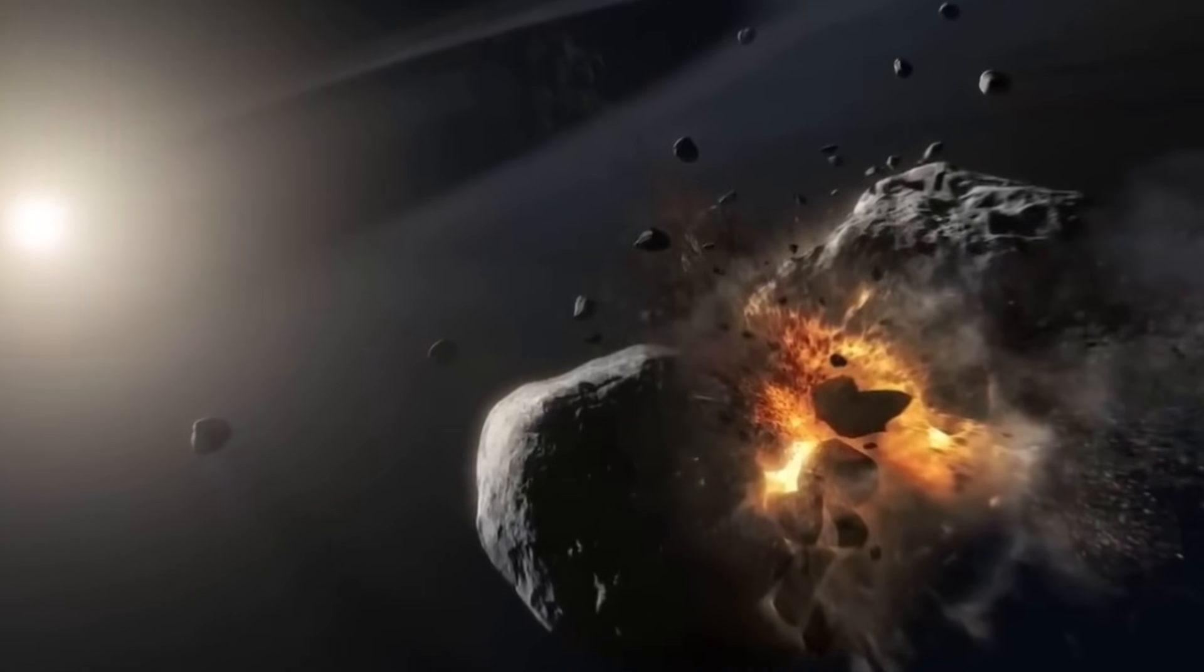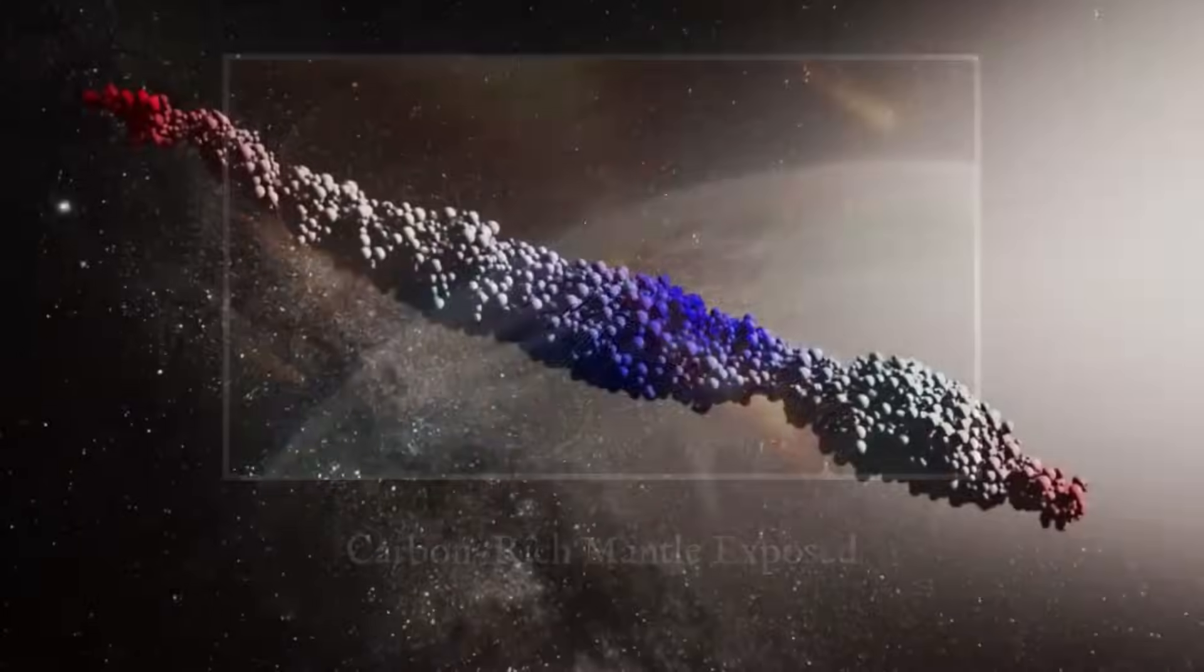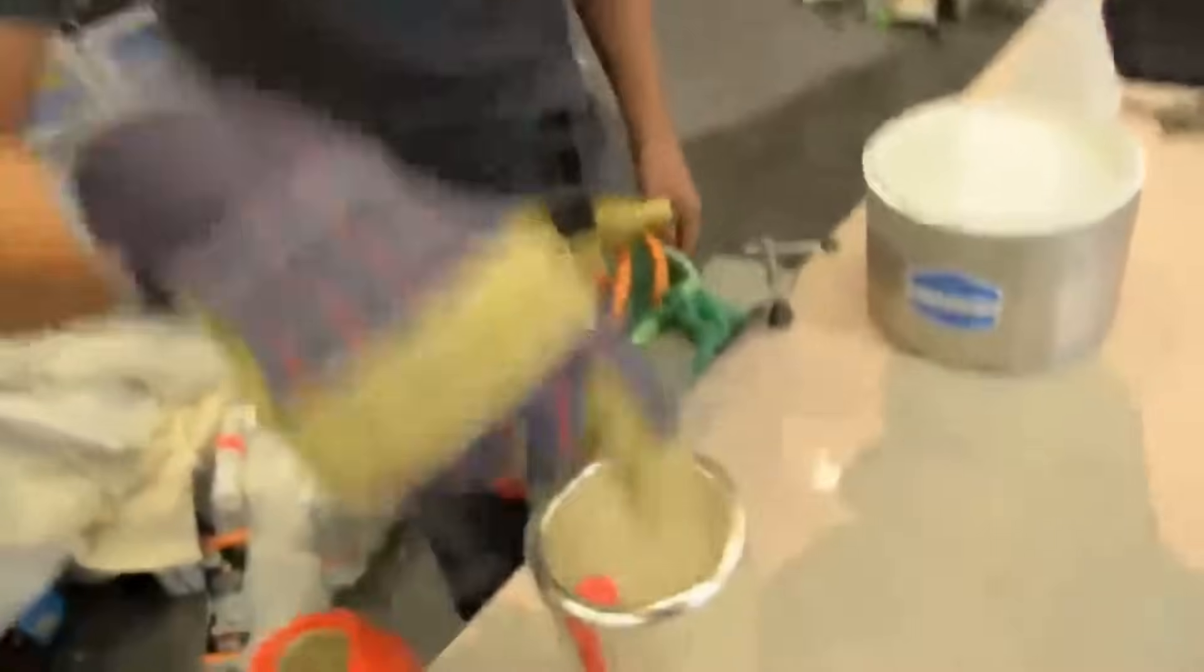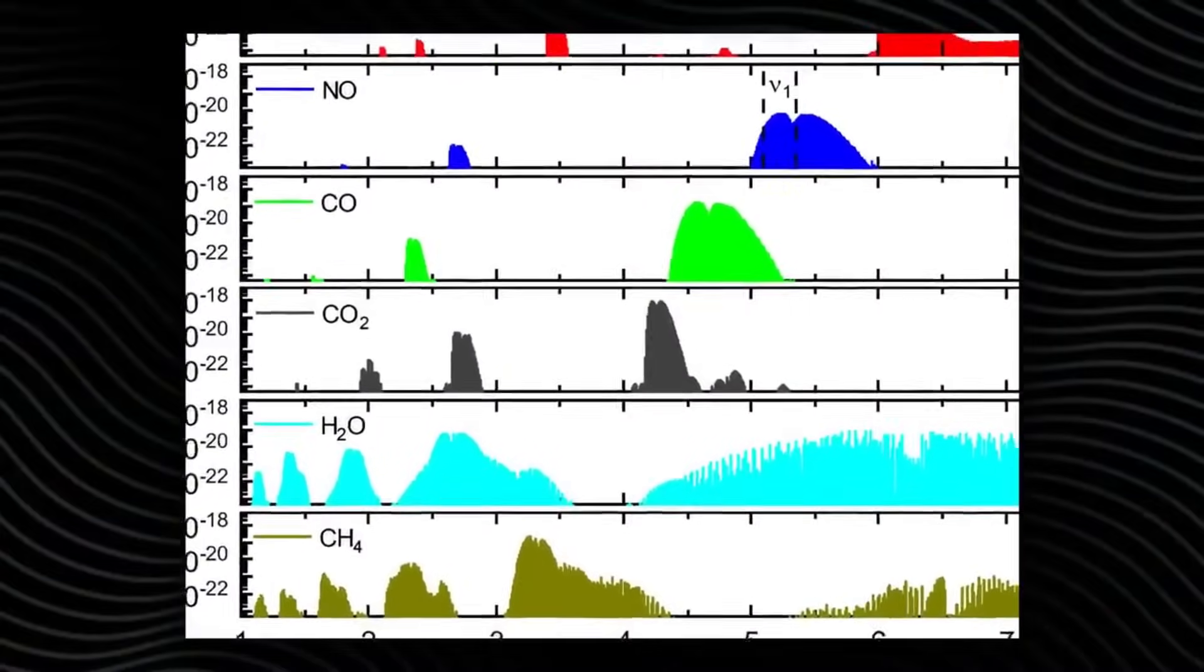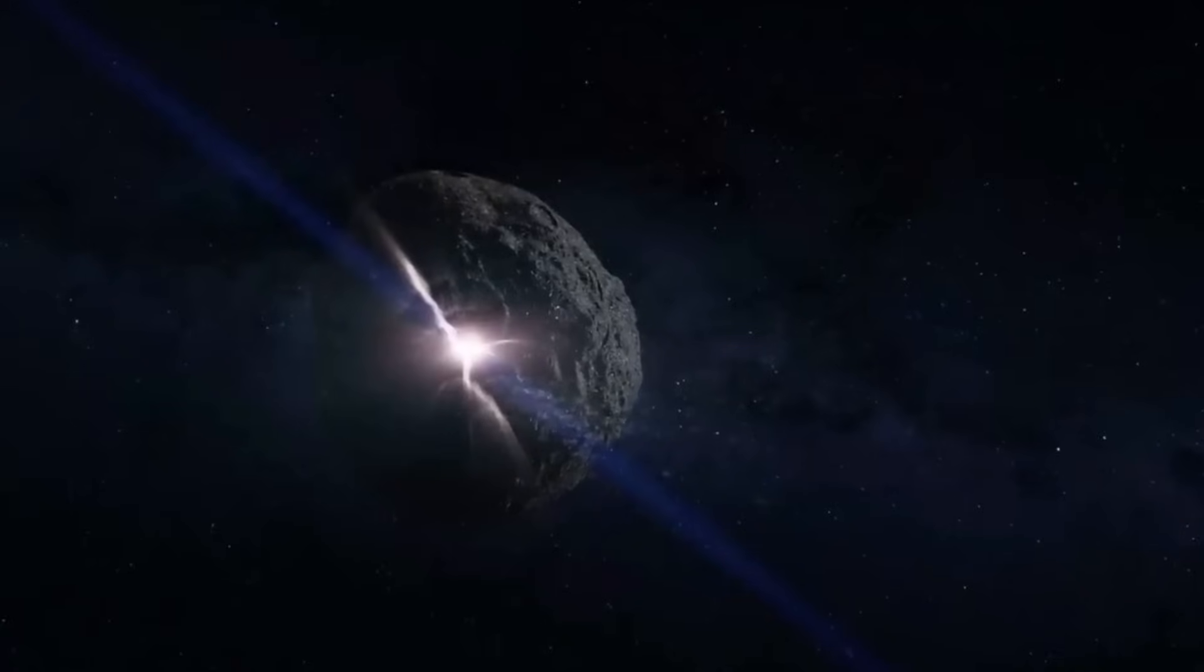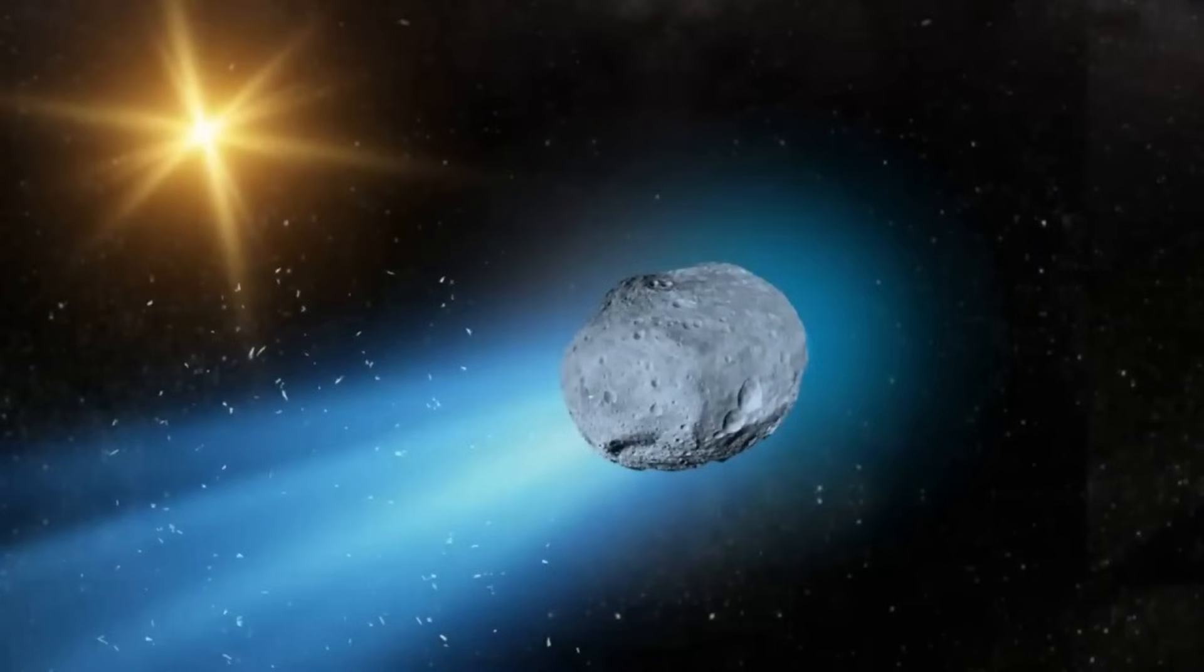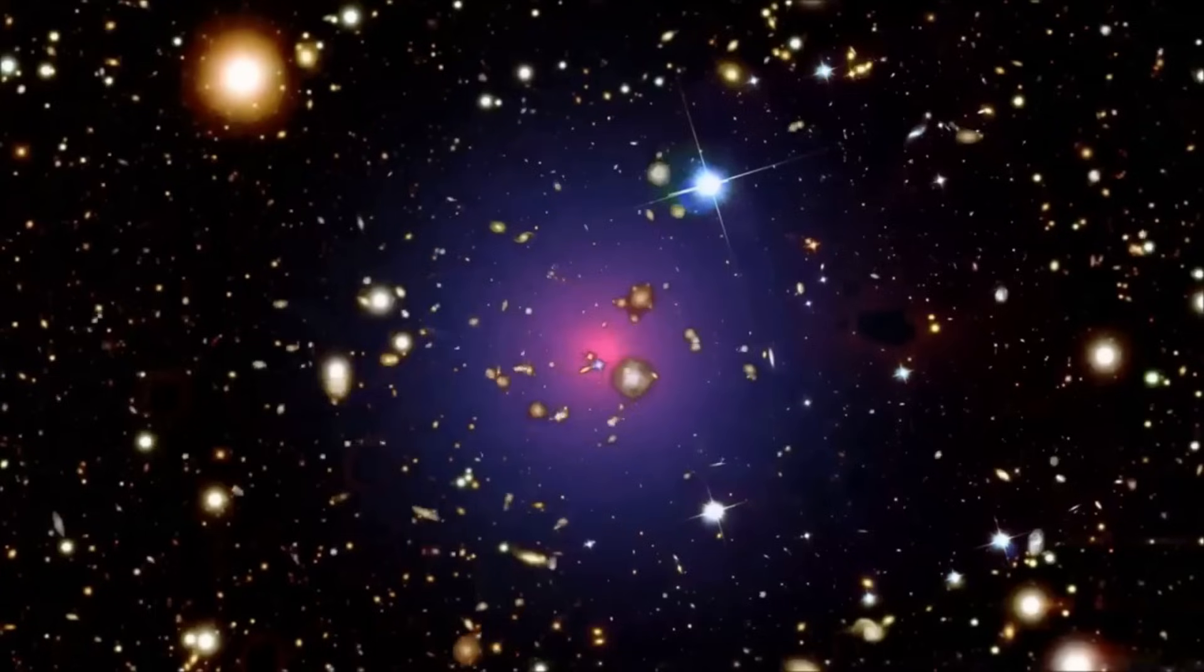But for scientists, this isn't just about spectacle or entertainment. 3I/Atlas represents a unique opportunity to test the limits of human knowledge about the universe. Astrobiologists see the comet as a messenger from another star system, carrying clues about the chemistry that shapes planets and possibly life throughout the galaxy. If the gases streaming from this visitor are truly unlike anything in our solar system, it means our corner of the universe might be just one example in a much larger and more diverse cosmic experiment. The stakes are enormous.